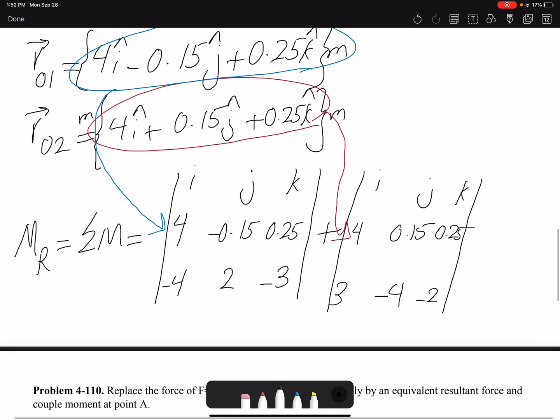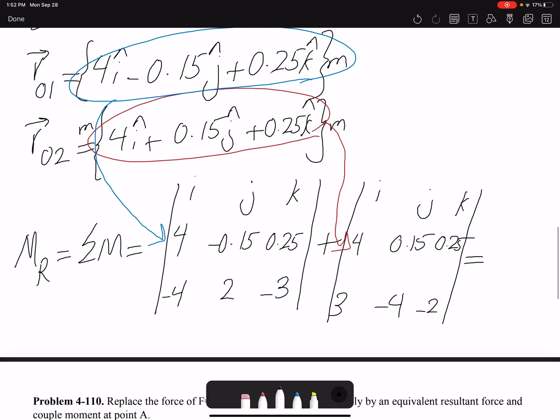And if we find the value, I'm going to write it here. So our moment would be 0.65I plus 19.75J, negative 9.05K. And the unit system that we have is kilonewton meter.